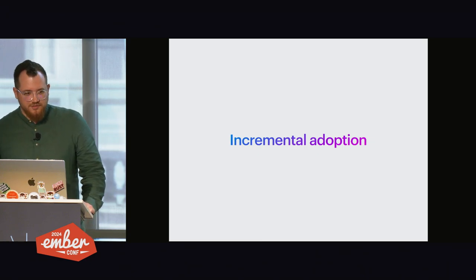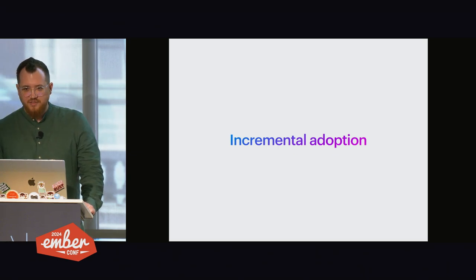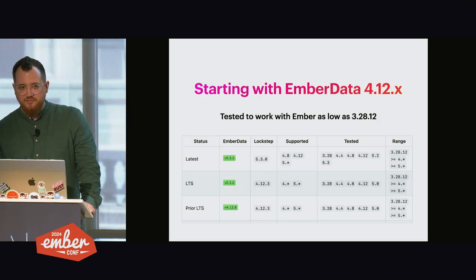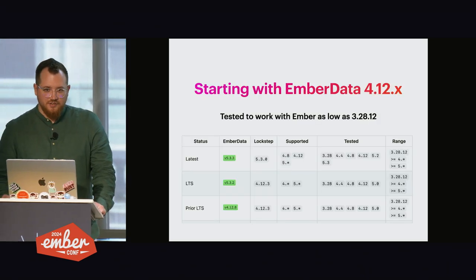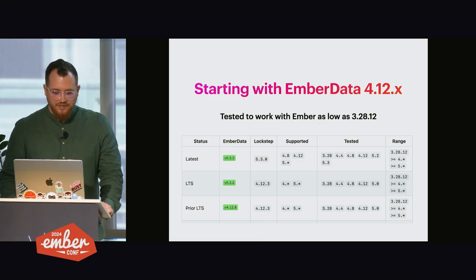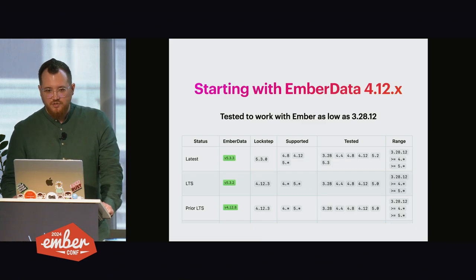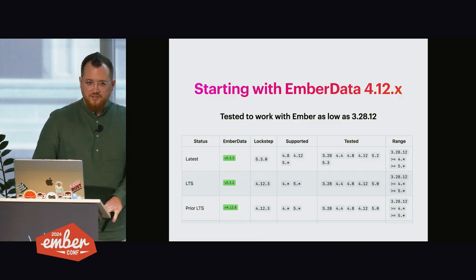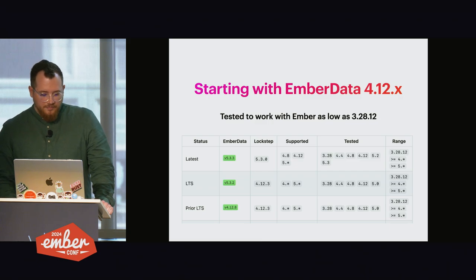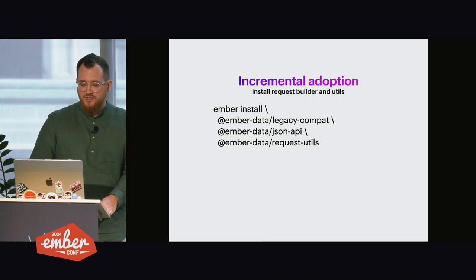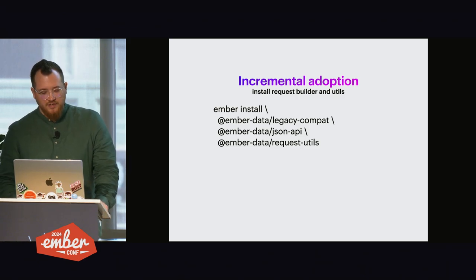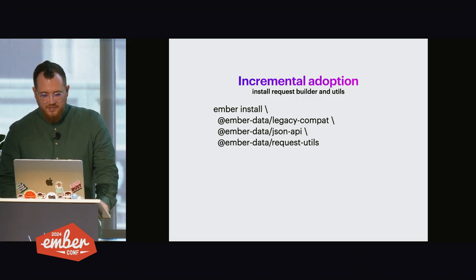Incremental adoption would be the main way of upgrading most applications, I hope. People who are already on the semi-latest versions should be fine. Starting with Ember data 4.12, you already have everything you need — the request manager, handlers, builders, everything is available there. Ember data 4.12 is actually tested against older versions of Ember as well. So even if you are at Ember 3.28, you could update to 4.12 without updating Ember itself and start your incremental adoption journey. You would need to install some packages: Ember data legacy compact, Ember data JSON API, request tools. Let's say we're going to convert Ember data that's already set up to work perfectly with JSON API.